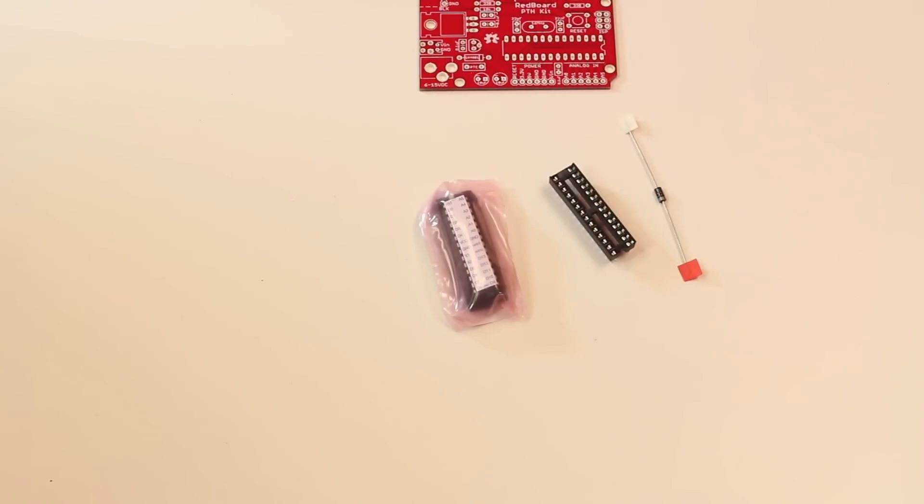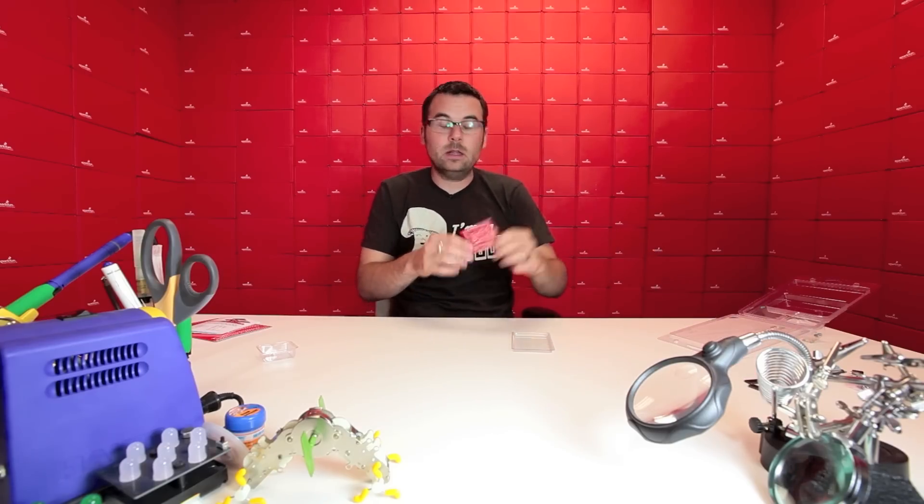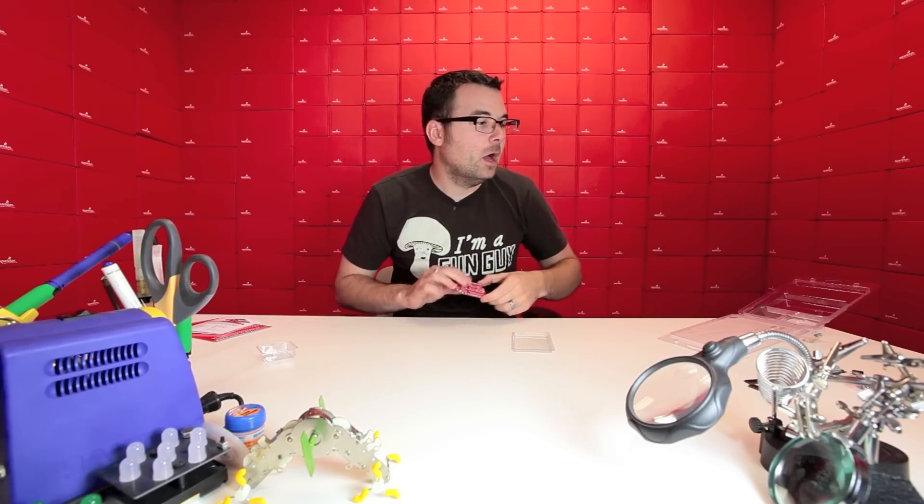And then we have the other various pieces in here like the barrel jack, voltage regulator, things like that, button, blah blah blah. So this is what comes in the kit. And when you're done, you have something that looks pretty much exactly like a red Arduino.